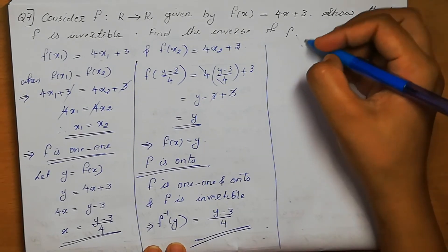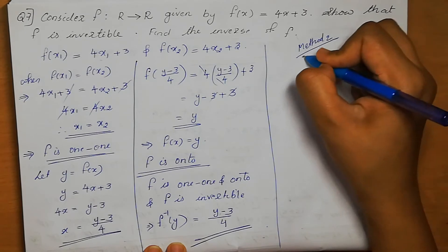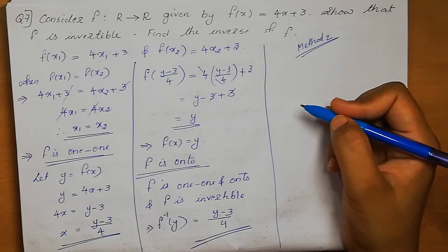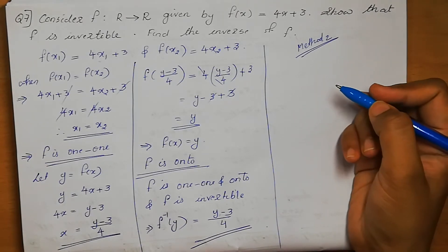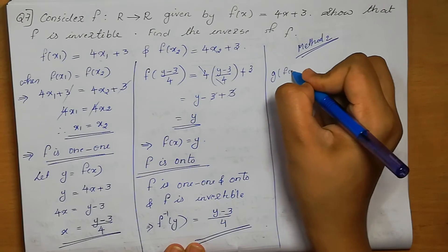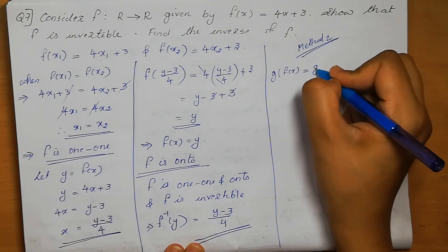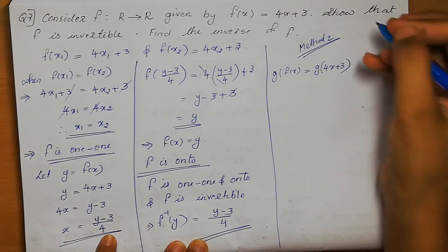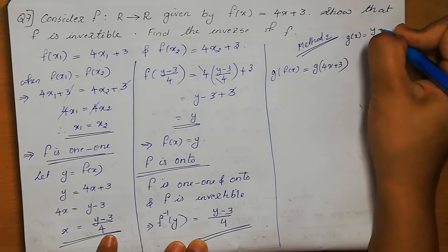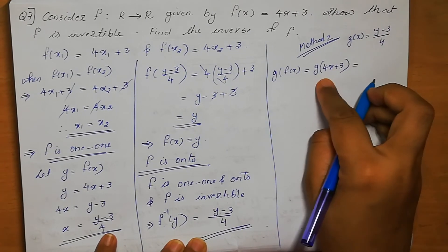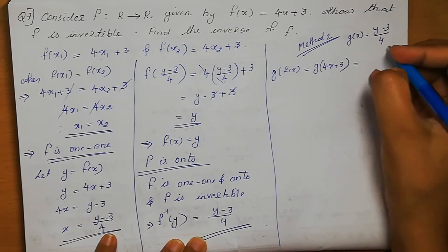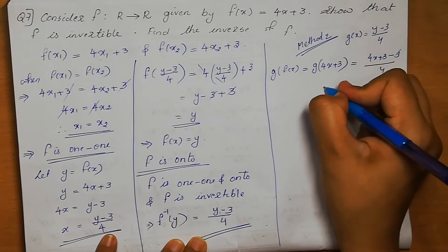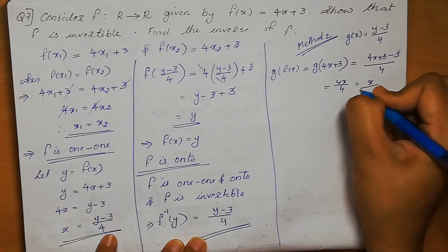Otherwise, one more method we can follow — Method 2. Method 2 means we need to find g(f(x)) and f(g(x)). If both answers equal the identity, the function is invertible. First we find g(f(x)). g(x) = (y-3)/4, so instead of y we write 4x+3: g(f(x)) = (4x+3-3)/4 = 4x/4 = x.